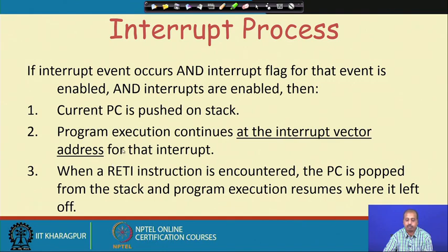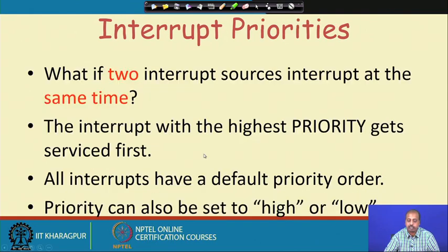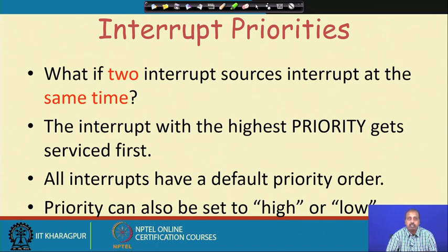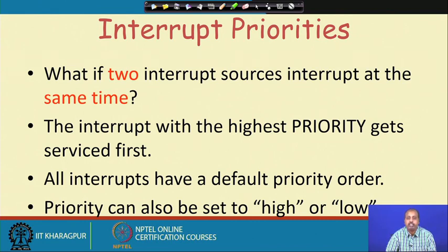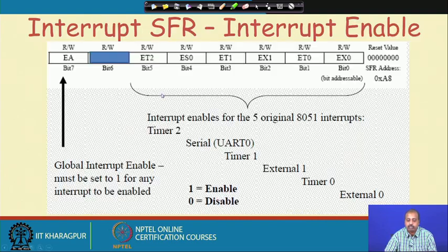Next we look into interrupt priorities. What if two interrupt sources interrupt at the same time? In 8085 there is a priority setting — trap has the highest priority, then 7.5, 6.5, 5.5. In 8051 also we have the concept of priority. The interrupt with the highest priority gets service first, and all interrupts have a default priority order. Priority can also be set to high or low.